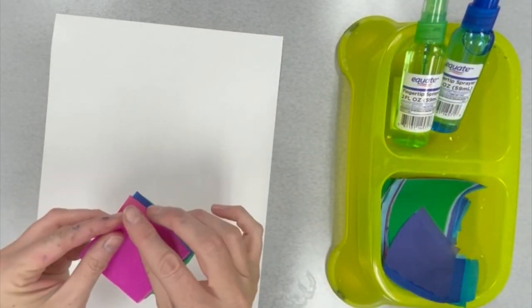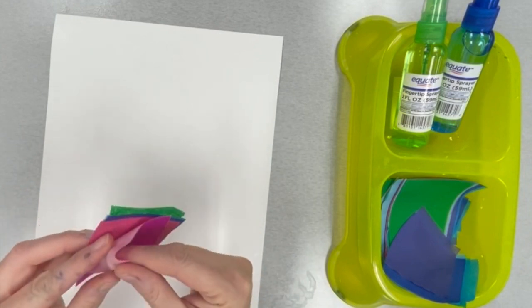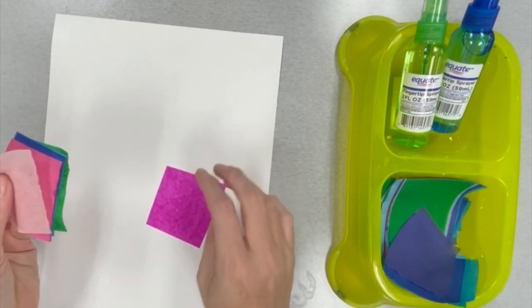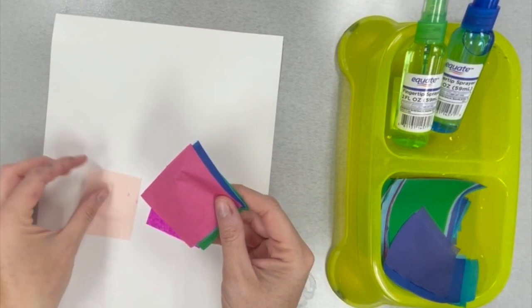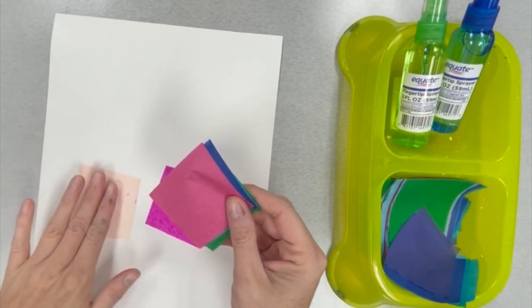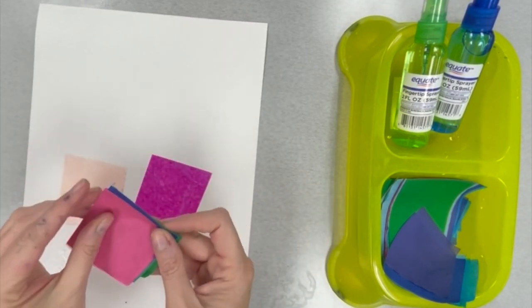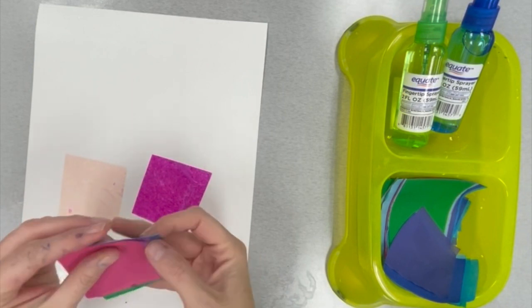This is a special kind of tissue paper. It's called bleeding tissue paper and I can't wait to show you what happens later. But for now, we want to place a square over the entire white piece of paper.